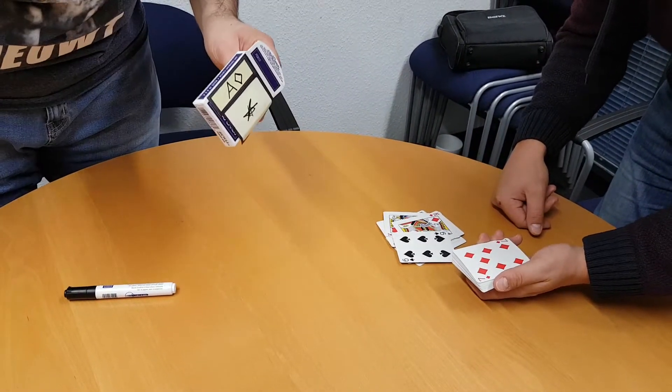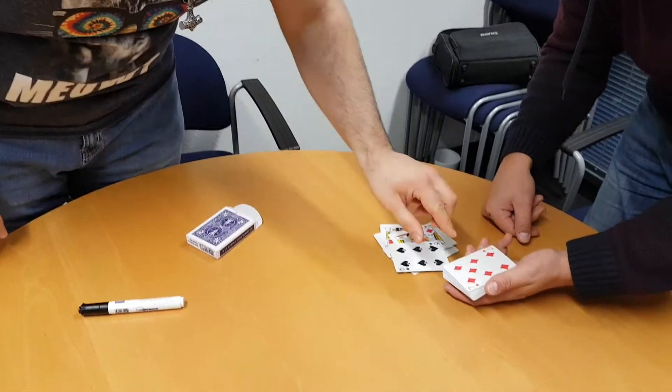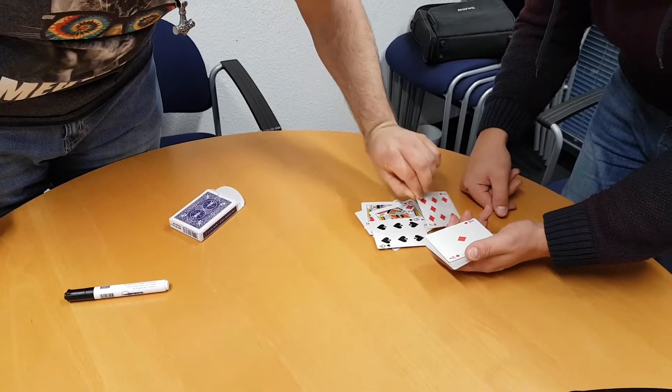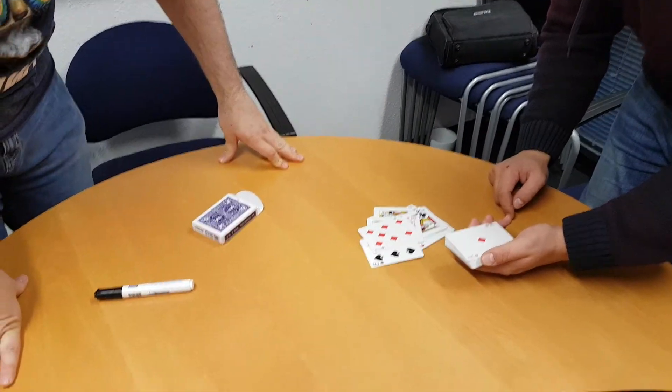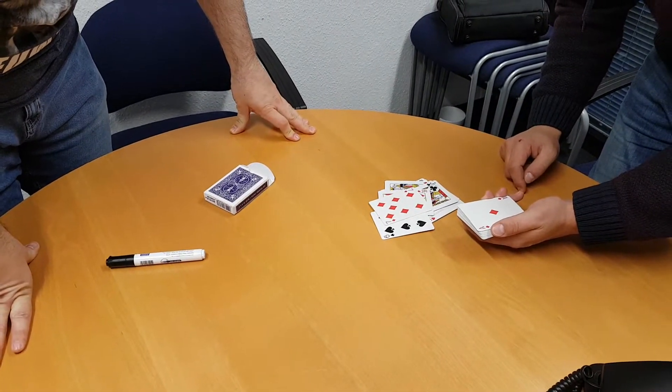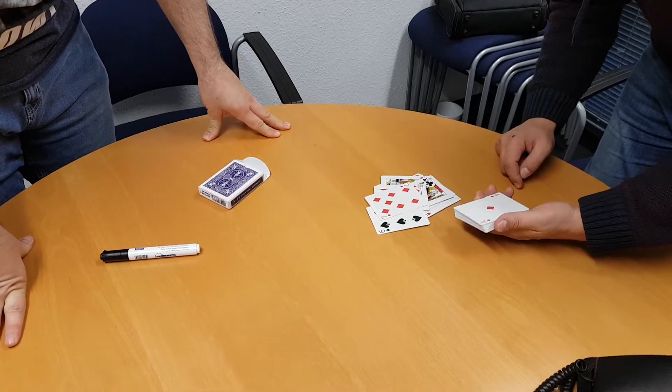Because I noted down the Ace of Diamonds. So this is your card, right? Yeah. Oh, is it? Yeah. Ah, I missed one. Damn it. But it was, it was close, right? It was the diamonds. Yeah.